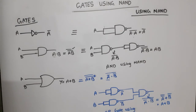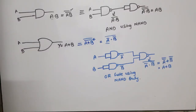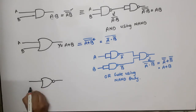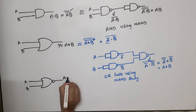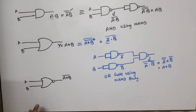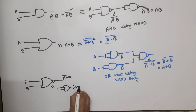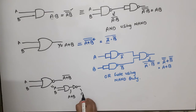Now let's do NOR gate. The symbol of NOR gate with inputs A and B gives output A plus B bar. This is equivalent to one OR gate with one inverter. OR gate gives A plus B, and then we take its complement to get A plus B bar.